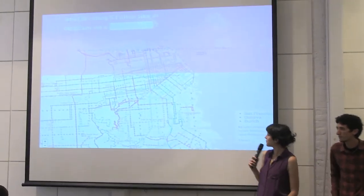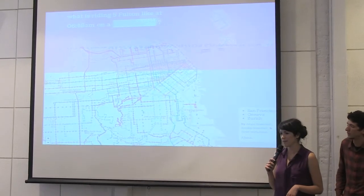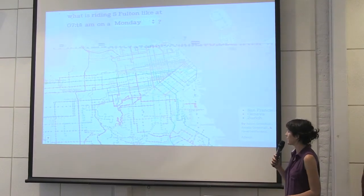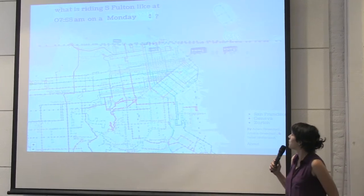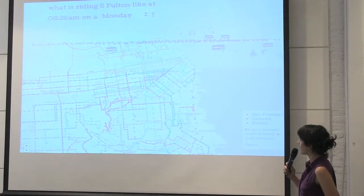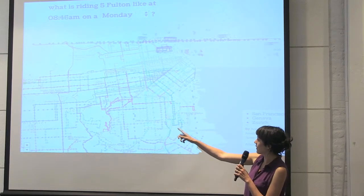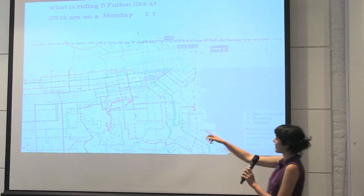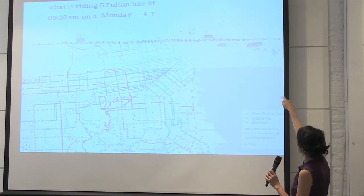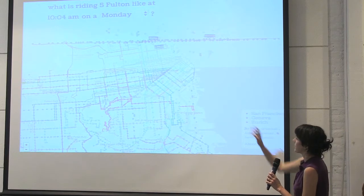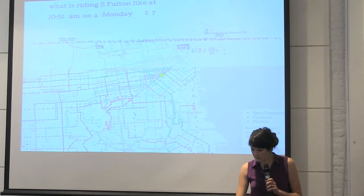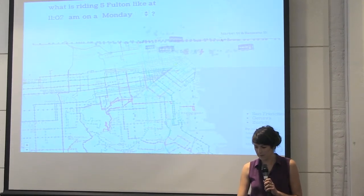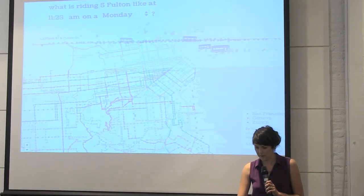So bringing it all together we get the original map. The top panel changes color based on the time of day — dawn just happened and it's getting light. This is San Francisco's Number 5 Fulton line, with all the buses moving during morning rush hour, going from the outer areas toward downtown. You can see more people getting off closer to downtown and more people getting on out on the outer lines.